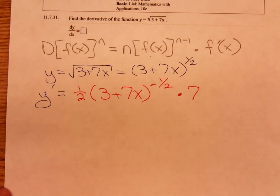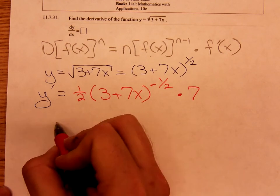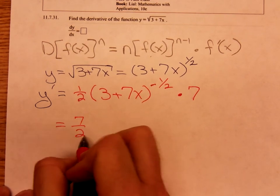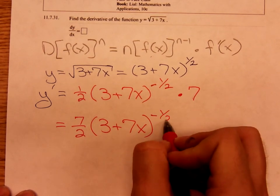And we have two monomial factors. One-half times seven, that's just seven-halves, times 3 plus 7x to the negative one-half.